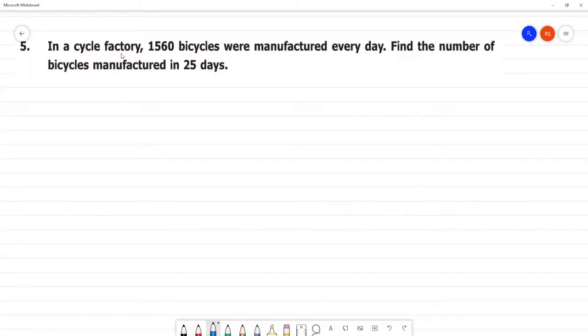In a cycle factory, 1560 bicycles were manufactured every day. So in a single day, one day, how many cycles are manufactured? 1560 bicycles are manufactured. Find the number of bicycles manufactured in 25 days.